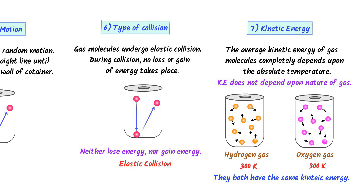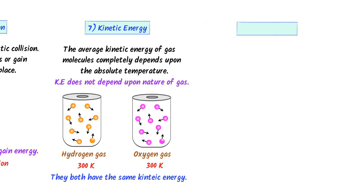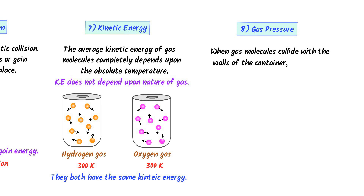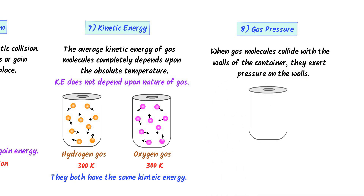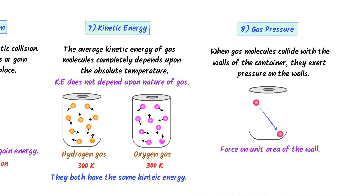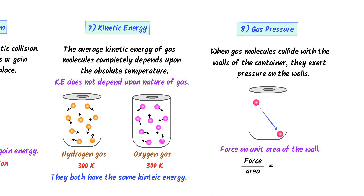The eighth postulate of the Kinetic Molecular Theory of Gases is about gas pressure. It states that when gas molecules collide with the wall of the container, they exert pressure. When a molecule collides with the wall, it exerts force on the unit area of the wall. Since force per unit area is called pressure, this is the gas pressure on the wall of the container.